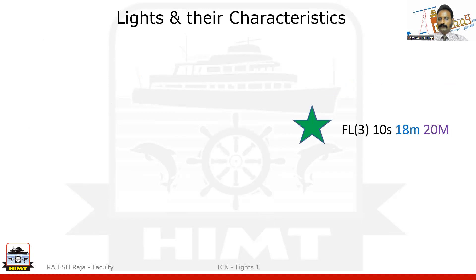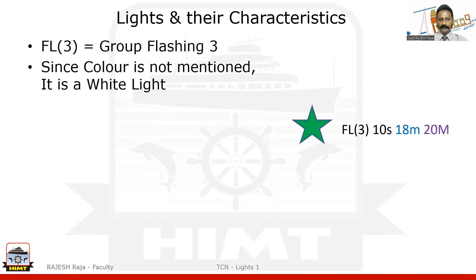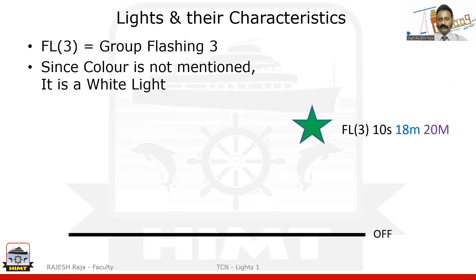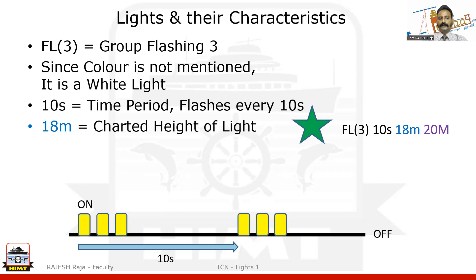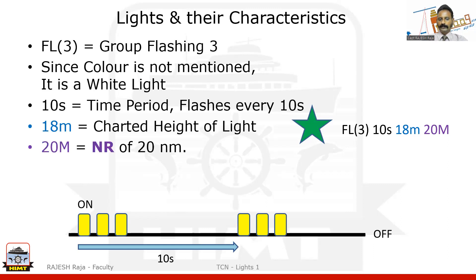Flashing three — or group flashing three. Color not mentioned, so it's white. The light is always off, and then you get three flashes in a group. It says 10 seconds time period — that is from the start of the first flash in the group to the start of the first flash of the next group. 18 meters is the charted height, and 20 nautical miles is the nominal range.